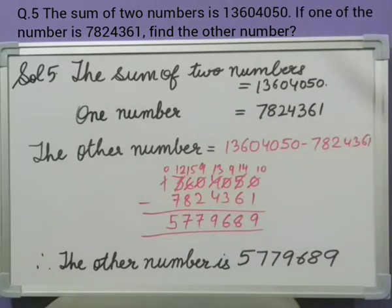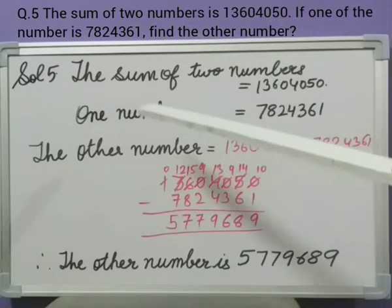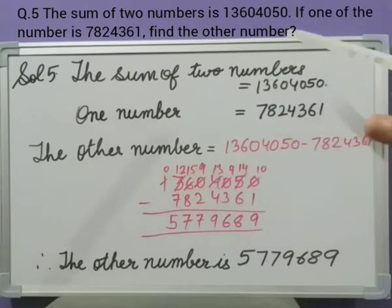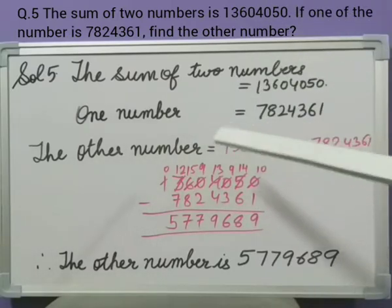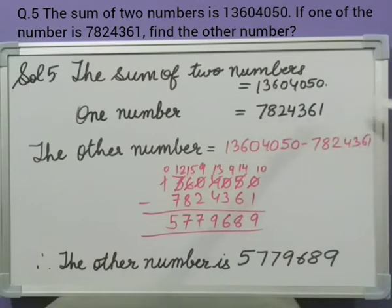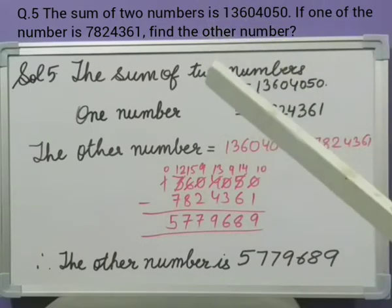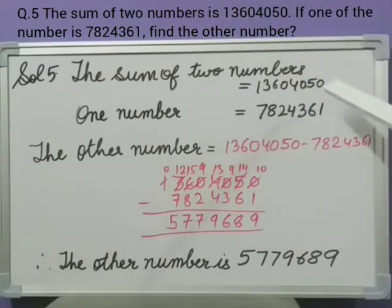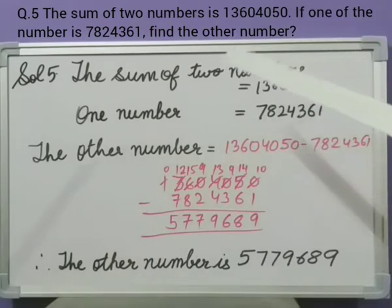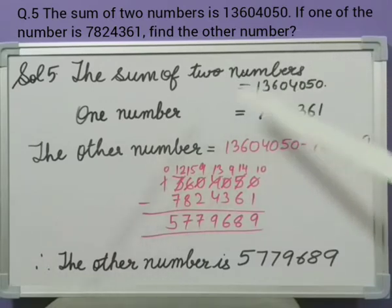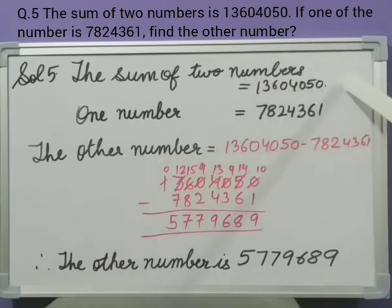From those two numbers, one number is already given — that number is 78,24,361. So how can we get the other number? By subtracting. If we got this number by adding them, we can find the other number by subtracting the one number from the sum.